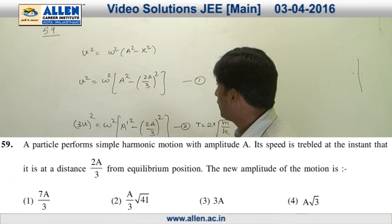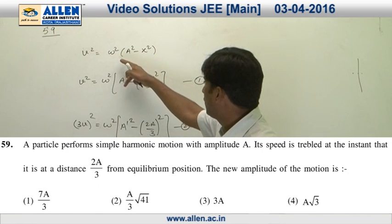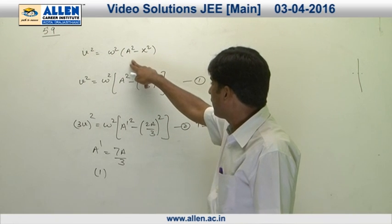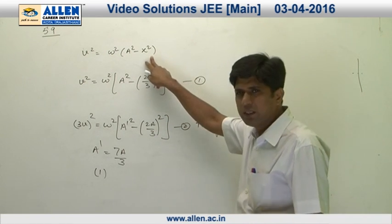In question number 59, we will use the formula v² = ω²(a² - x²) in both cases.